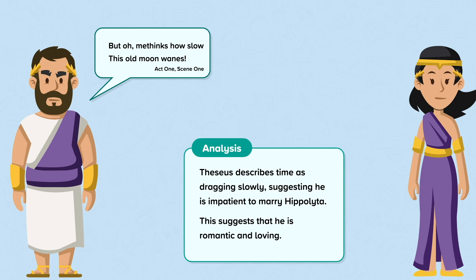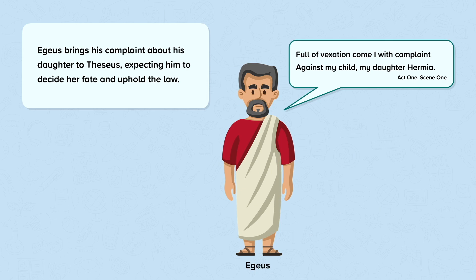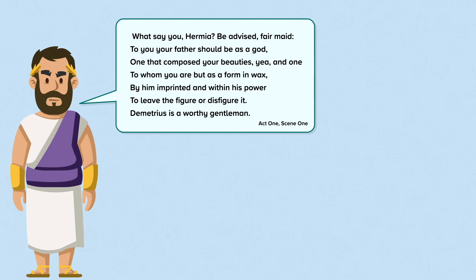Aegeus brings his complaint about his daughter to Theseus, expecting him to decide her fate and uphold the law. Theseus is fair and asks Hermia for her opinion, saying: "What say you, Hermia? Be advised, fair maid. To you, your father should be as a god — one that composed your beauties, yea, and one to whom you are but as a form in wax, by him imprinted, and within his power to leave the figure or disfigure it. Demetrius is a worthy gentleman."